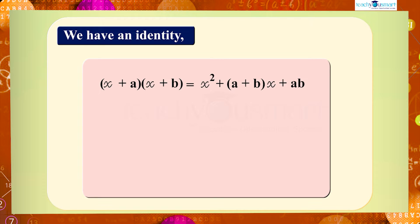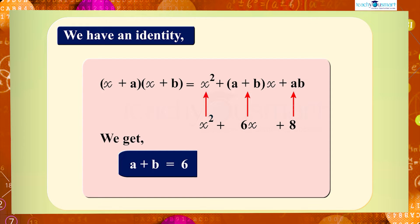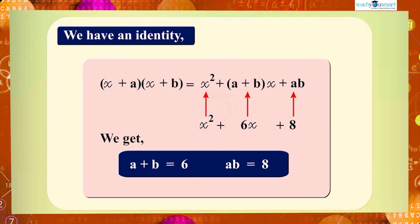Comparing the given expression x² + 6x + 8 with the RHS of the identity, we can write a + b = 6 and ab = 8. So first we have to find the values of a and b.